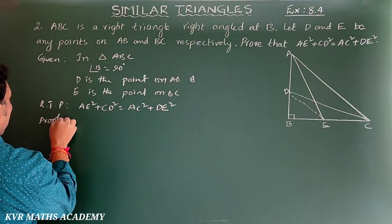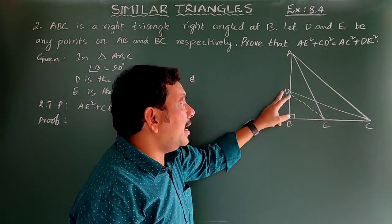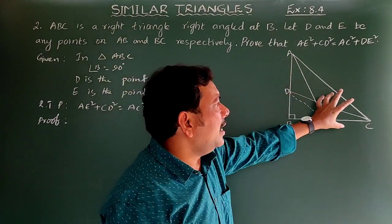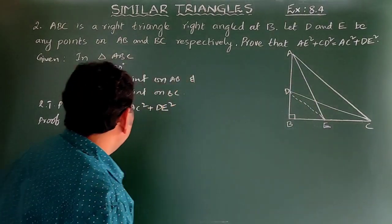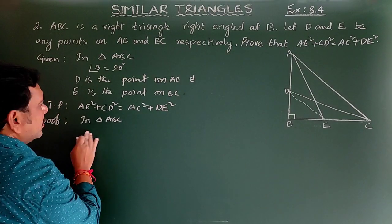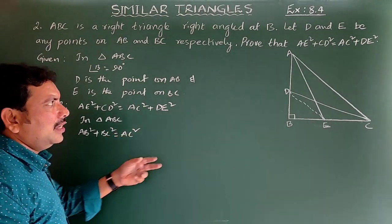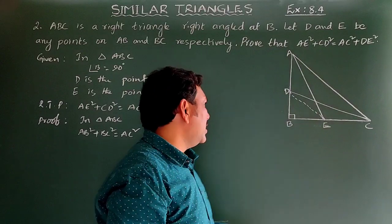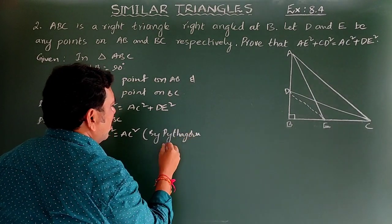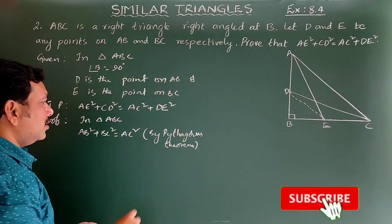Proof. Triangles ABC and DBE are all right-angle triangles. Take triangle ABC. In triangle ABC, by Pythagoras theorem: AB² + BC² = AC². This is equation number 1.